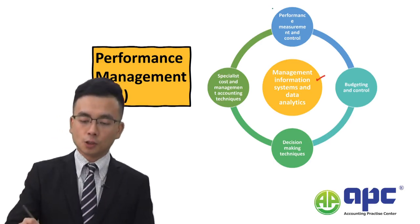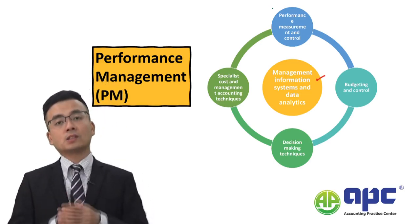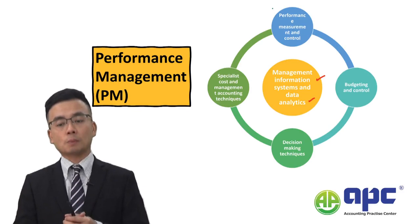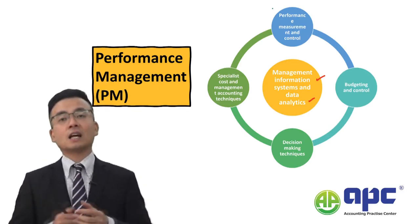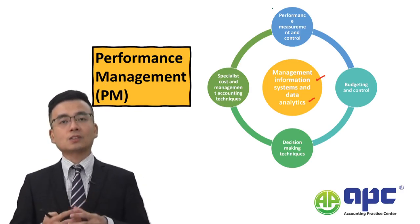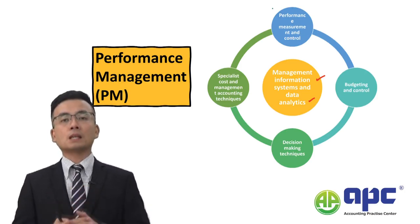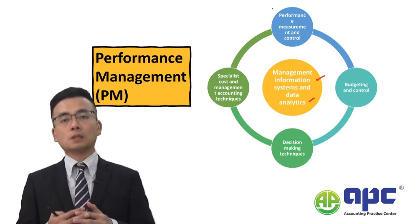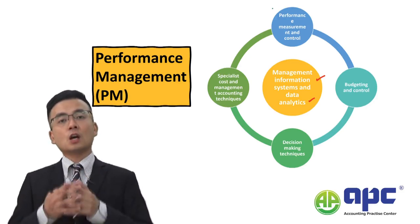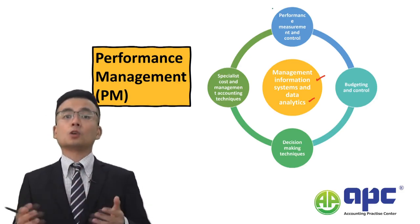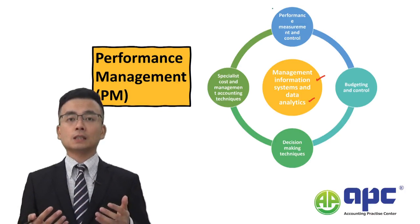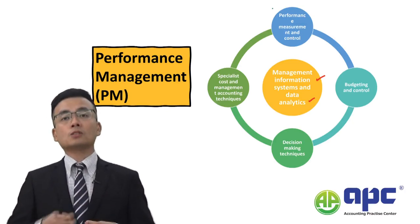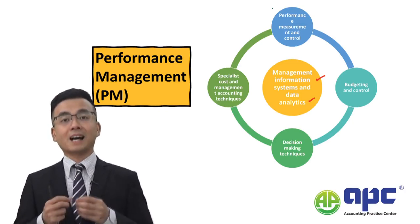The PM syllabus begins with MIS — the management information system — because nowadays we use IT to support decision making and data analytics tools. In the exam, it's highly likely you may be given a sub-requirement in Section C to comment on the advantages and disadvantages of such systems. The advantages include flexibility and the speed of processing transactions, while the disadvantage is being subject to cybersecurity risk.